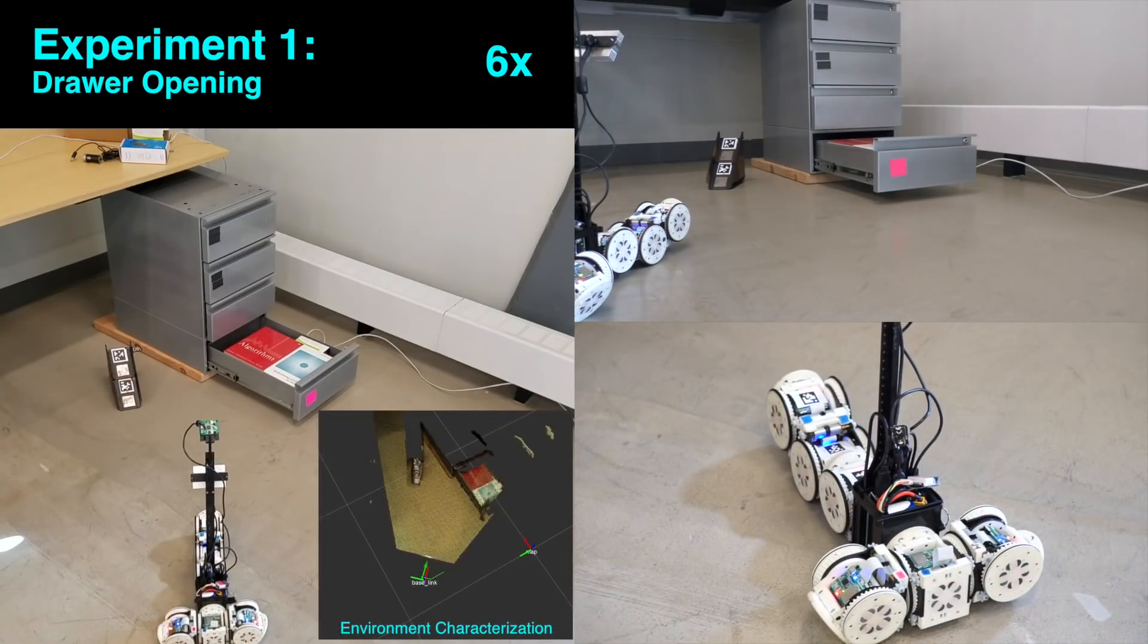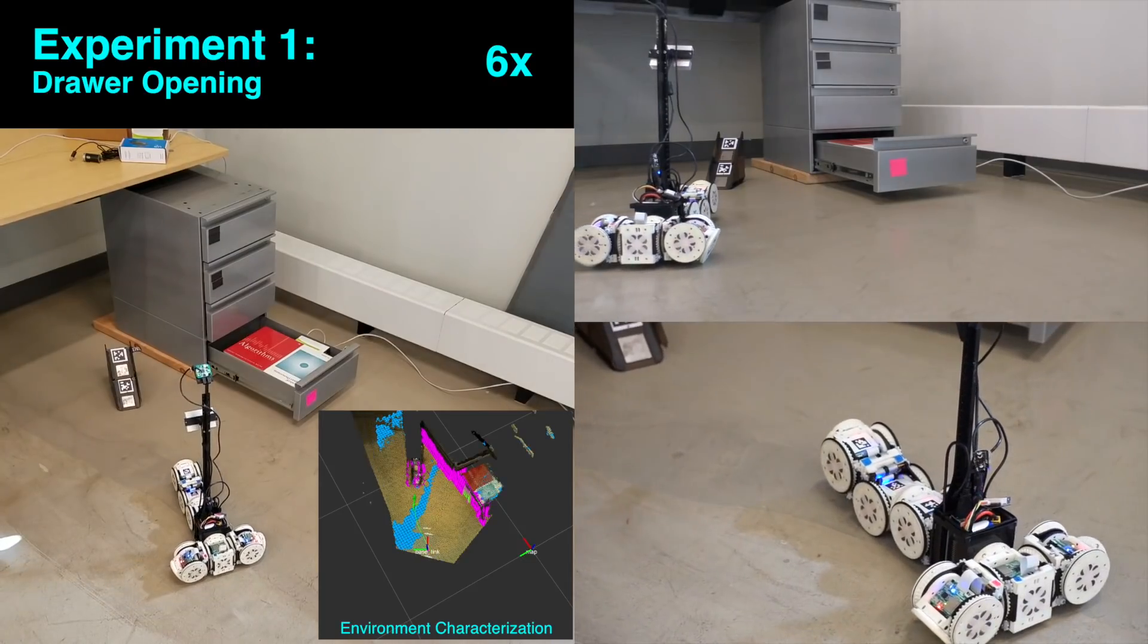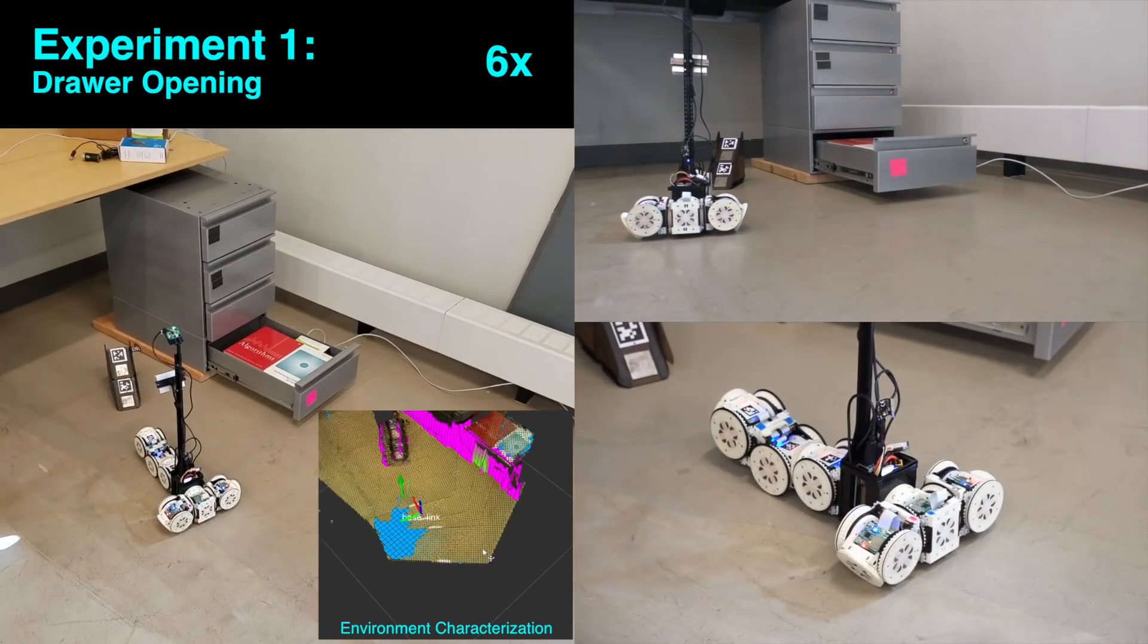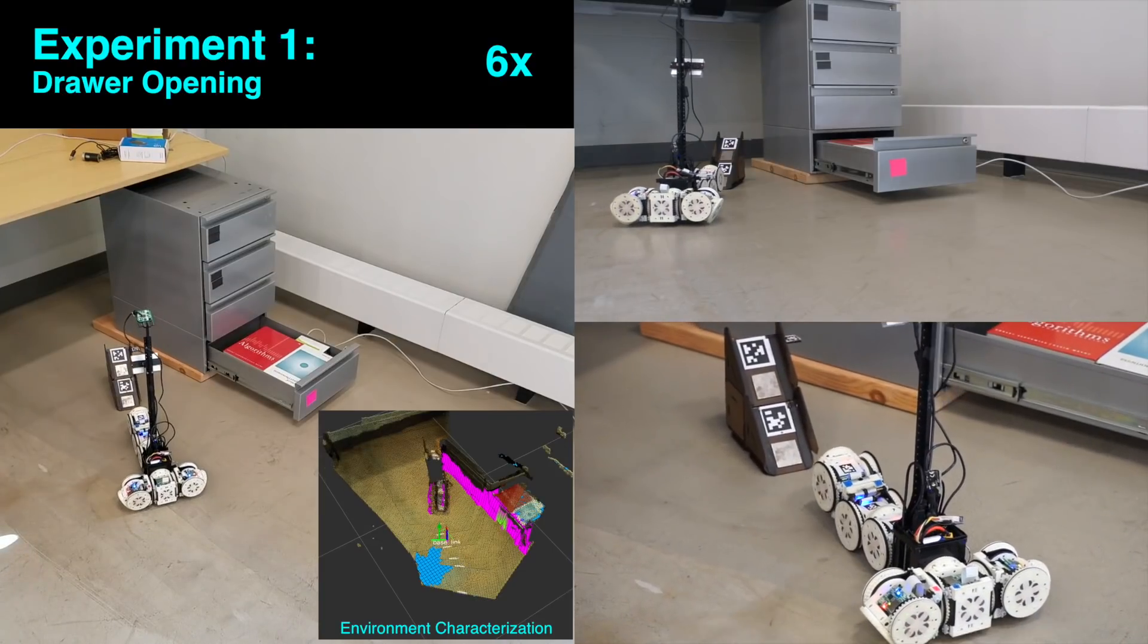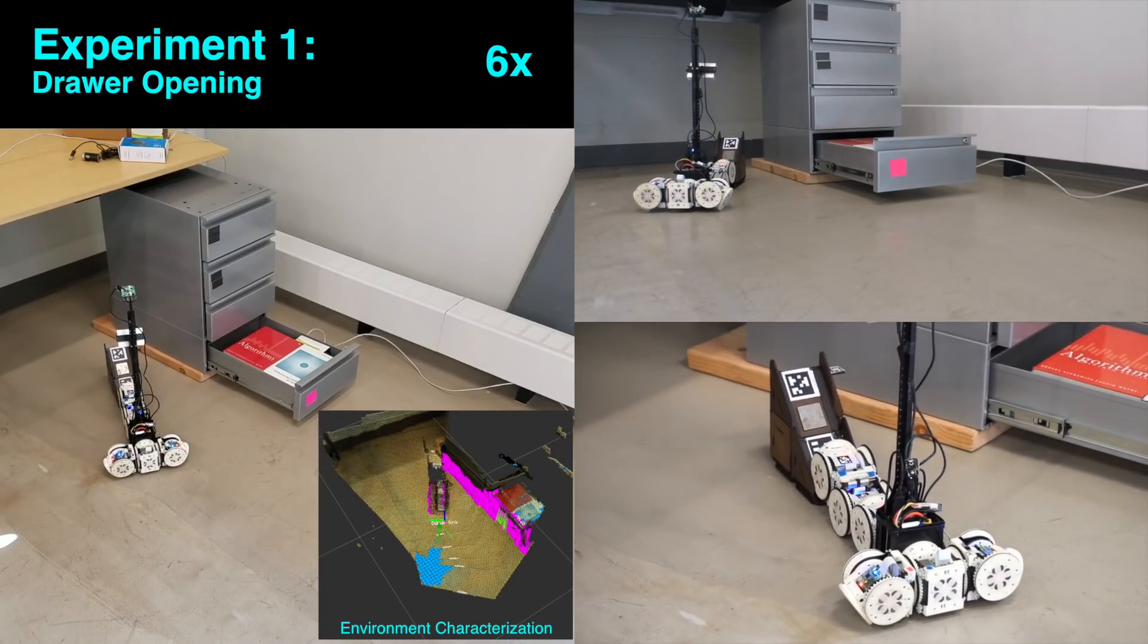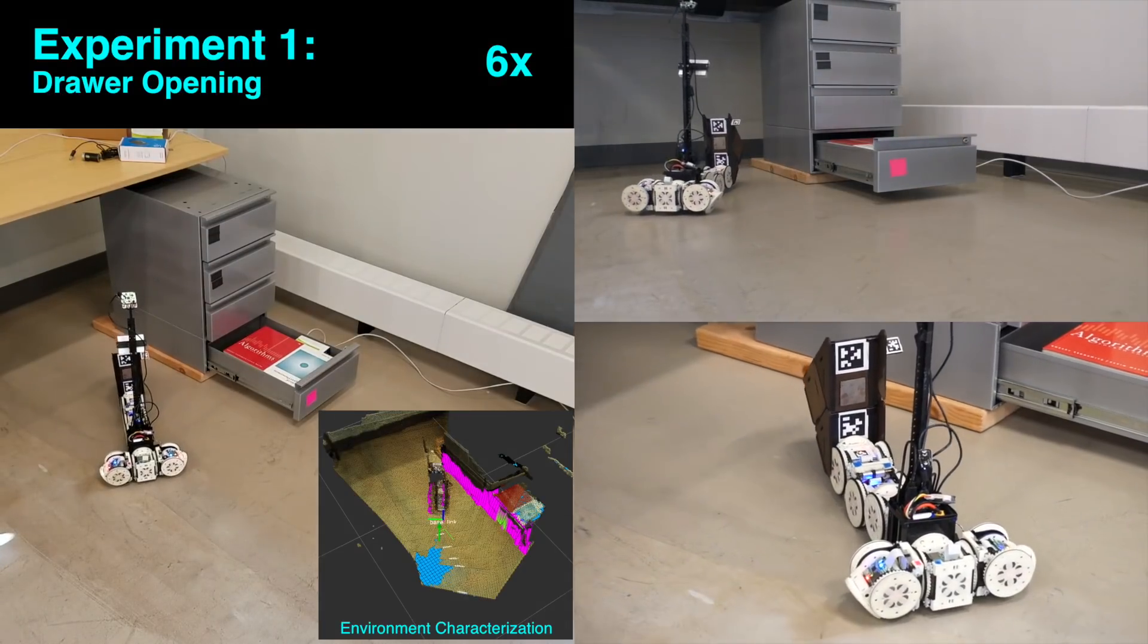Based on environment characterization, the high-level planner recognizes that this ledge is too high for any configuration in its design library to climb. However, it also identifies a pre-built ramp structure near the drawer. Recognizing that the ramp structure can be used to overcome the ledge obstacle, the high-level planner commands the robot to retrieve the ramp.